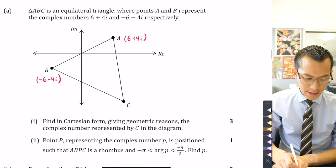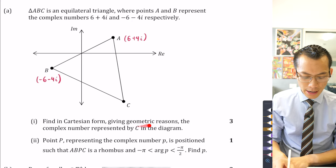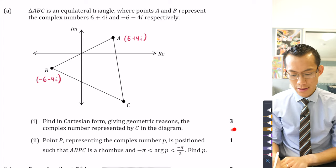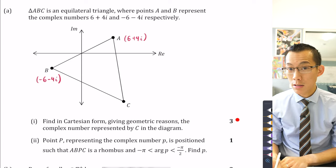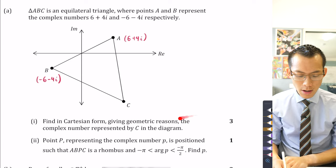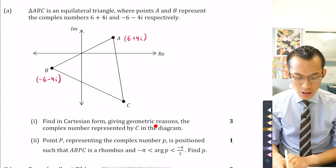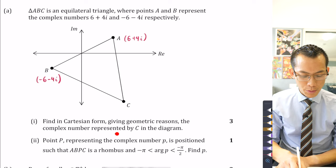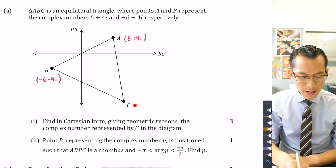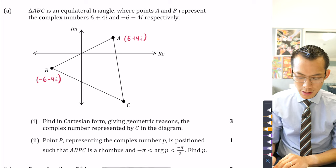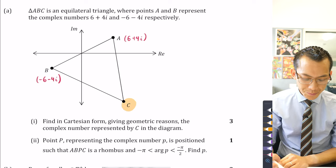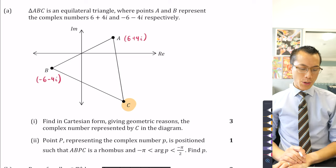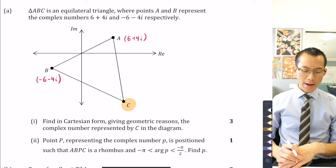Find in Cartesian form - and you had to give geometric reasons, which is why this question attracts so many marks - find in Cartesian form the complex number represented by C down here, so this is my target in the diagram. So how do I find this?